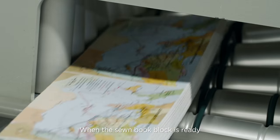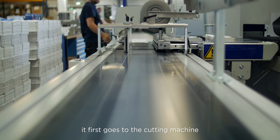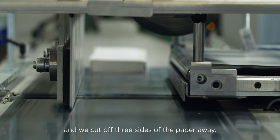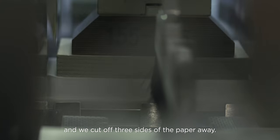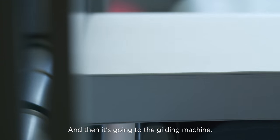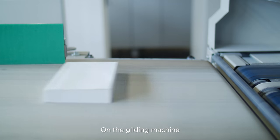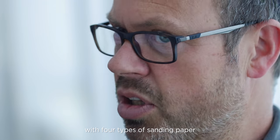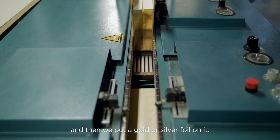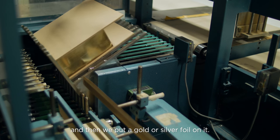When the sewn book block is ready, it's first going to the cutting machine. And we cut off three sides, put the paper away. And then it's going to the gilding machine. On the gilding machine we first sand with four types of sanding paper, and then we put a gold or silver foil on it.